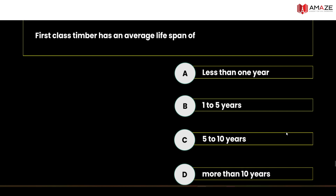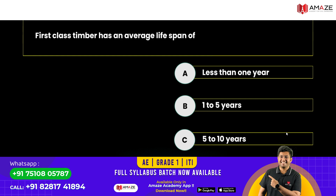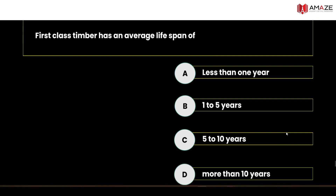First class timber has an average lifespan — options: less than 1 year, 1 to 5 years, 5 to 10 years, or more than 10 years. First class timber has a high durability, and we expect it to last more than 10 years.